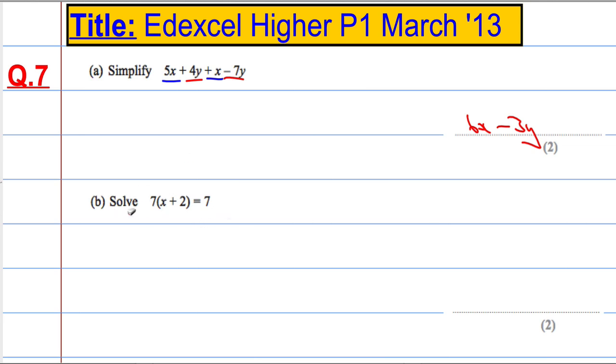Okay, next part B. We're asked to solve 7 times x plus 2 equals 7. So the first thing we're going to do is we're going to expand the brackets. Now, we could divide by 7 straight off the bat, but I'm going to expand. So that gives me 7 times x is 7x, and then 7 times 2 is 14, and that's equal to 7.